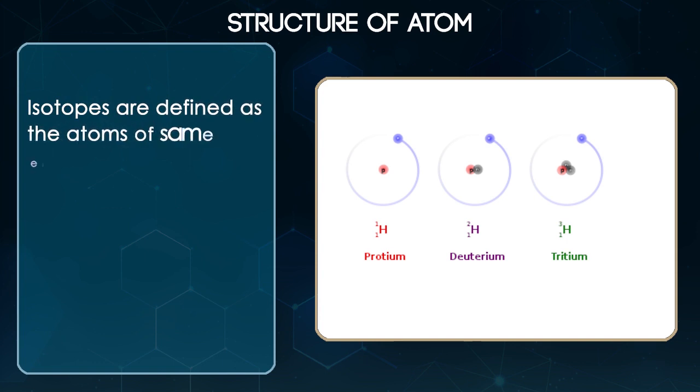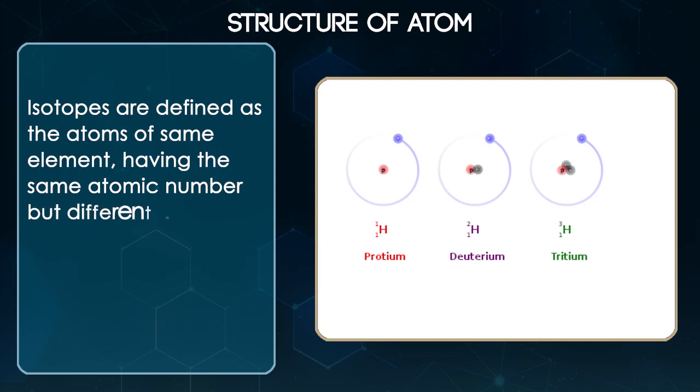Isotopes are defined as the atoms of same element having the same atomic number but different mass numbers. For example: 6C12, 6C13, 6C14.